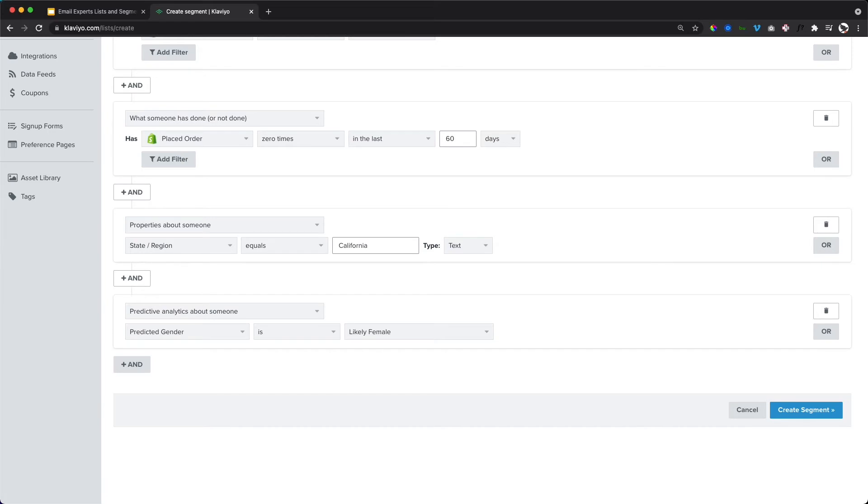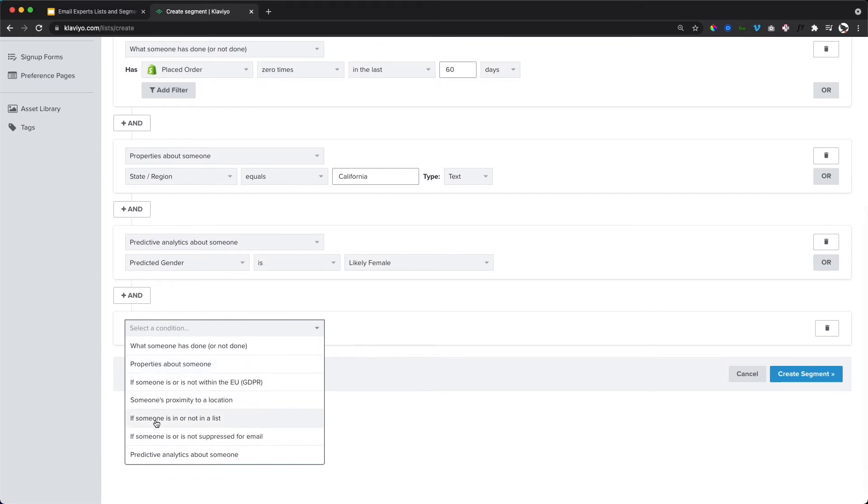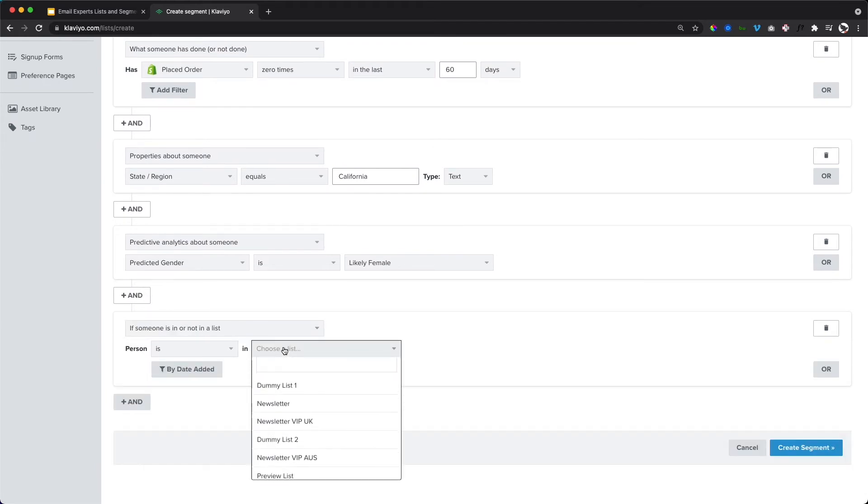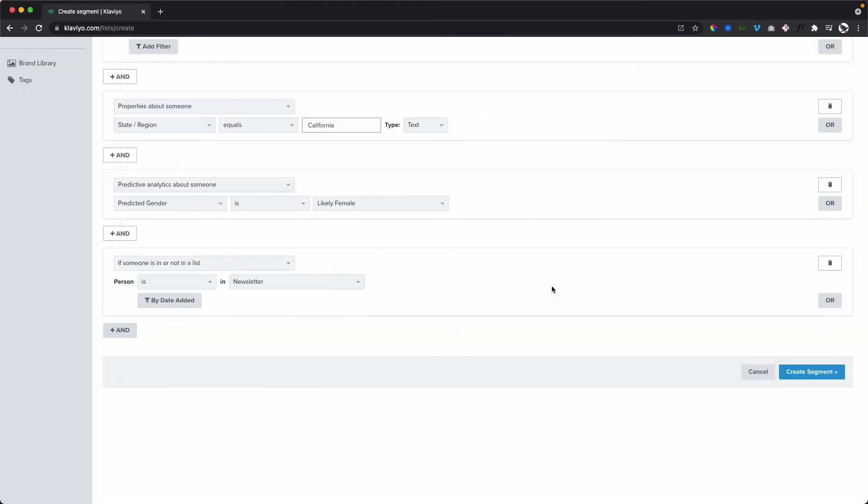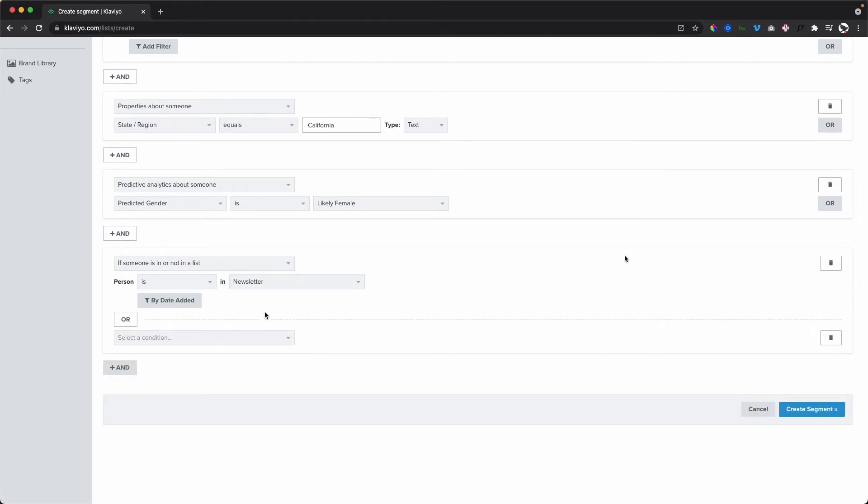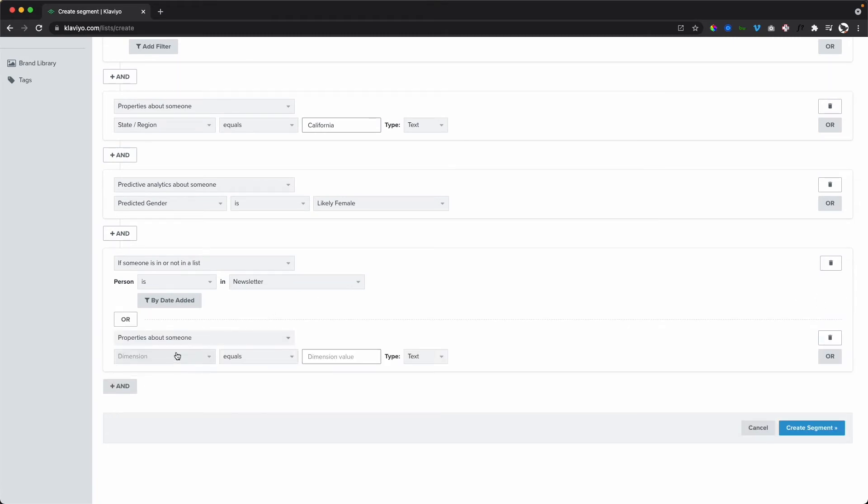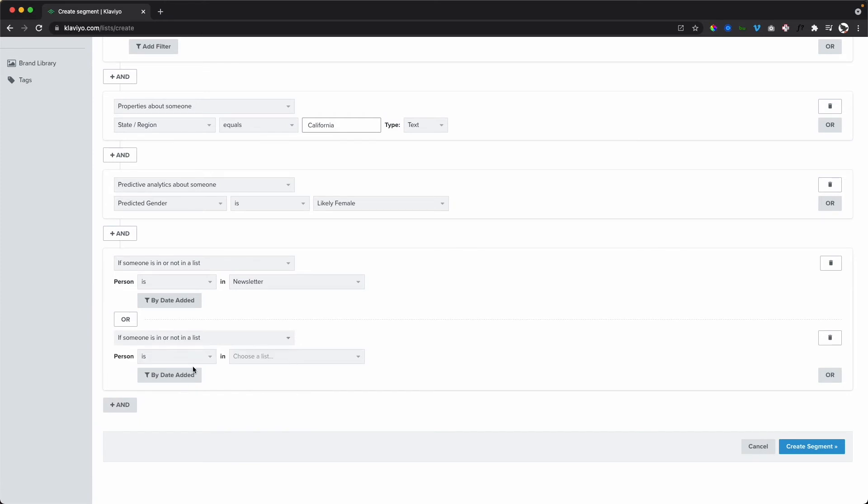So this would give us our segment. The other thing that I mentioned as well is that you should also include your main three lists as rules as well. So you click if someone is or is not in the list. So we'll choose our newsletter list or is in our Shopify accepts marketing list.